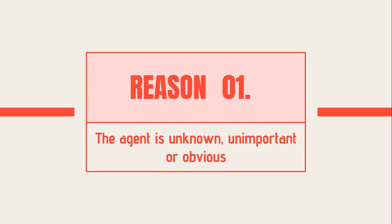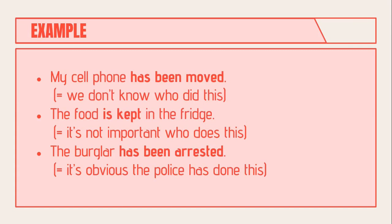The first reason for using the passive voice is when the agent is unknown, unimportant, or obvious. For example: 'My cell phone has been moved' — here we don't know who did it. Second: 'The food is kept in the fridge' — it's not important to mention who did it. Third: 'The burglar has been arrested' — it's obvious the police did it, so there's no need to mention the agent.